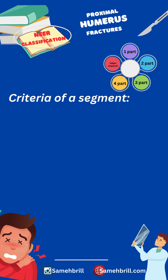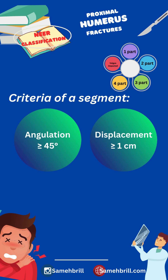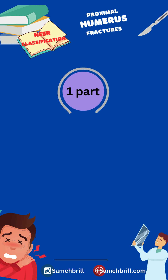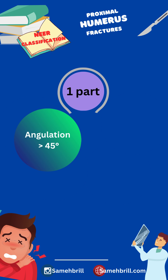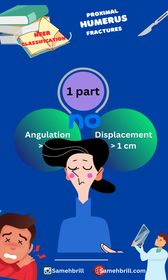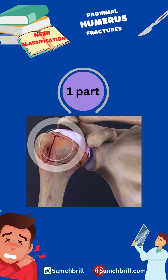In order to say there is a displaced fragment, this fragment must be at least angulated 45 degrees or displaced more than one centimeter. So one part fractures are minimally displaced, in which no segment has been angulated more than 45 degrees or displaced more than one centimeter. Remember, no matter how many fracture lines are present, if they don't meet the criteria, they are considered a one part fracture.